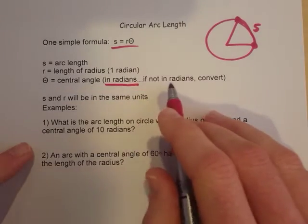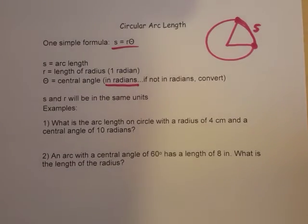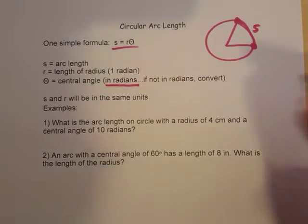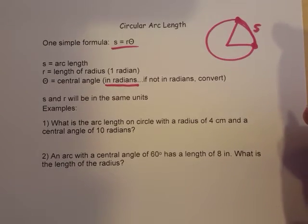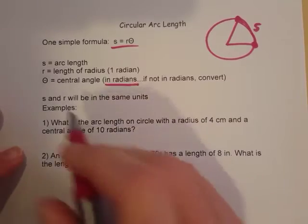If it's in degrees, if it's not in radians, we need to convert it to radians by using the methods from the last couple examples. And basically, it's multiply by pi over 180 and reduce. That's an important thing to know.